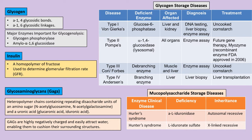Inulin is a homopolymer of fructose, is highly water soluble, and can be used to determine the GFR. Glycosaminoglycans, or GAGs, are heteropolymers containing repeating units of amino sugar and uronic acid — two different molecules joined together.